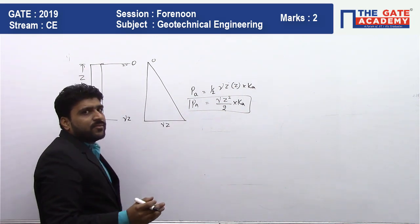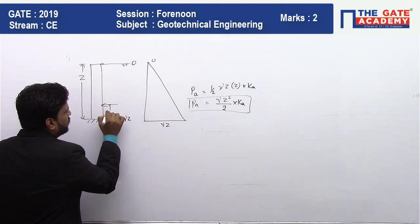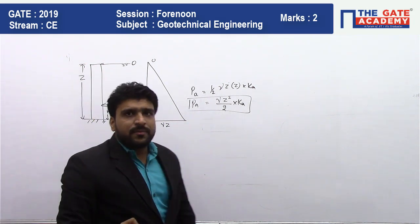Now this active earth pressure, because it is a triangle, where will be the CG of the triangle? It will work at h by 3 distance from the base. This is the CG, and this is Pa.